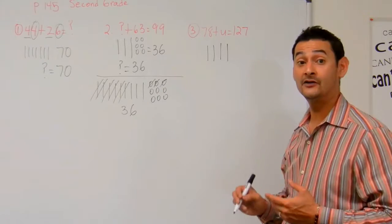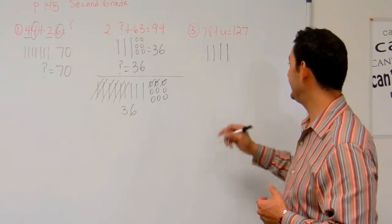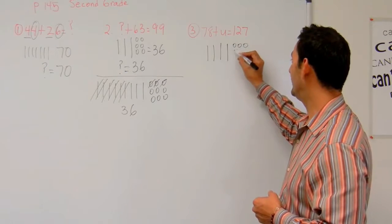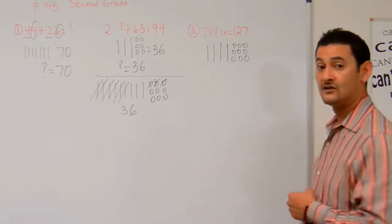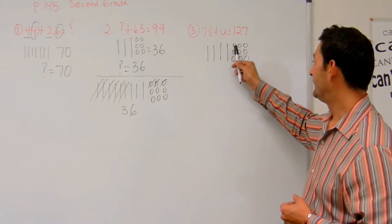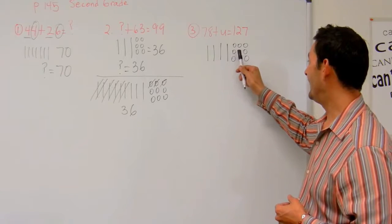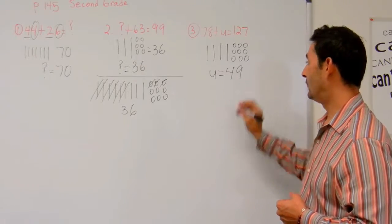I'm going to stop right there, because if I go again it's going to be 128. So I'll stop at 118, then 119, 120, 121, 122, 123, 124, 125, 126, 127. So what do I have? I've got 10, 20, 30, 40, 43, 44, 45, 46, 47, 48, 49. So U is going to equal 49.